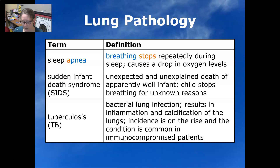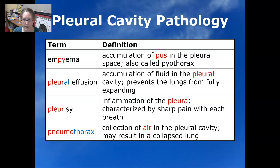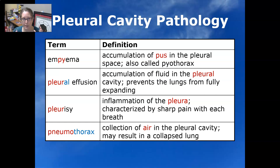Lastly, we look at pleural cavity pathology. Empyema is an accumulation of pus in the pleural space, also called pyothorax. A pleural effusion is an accumulation of fluid in the pleural cavity that prevents the lungs from fully expanding, interfering with gas exchange. Pleurisy is an inflammation of the pleura characterized by sharp pain with each breath. A pneumothorax is a collection of air in the pleural cavity that can result in a collapsed lung.